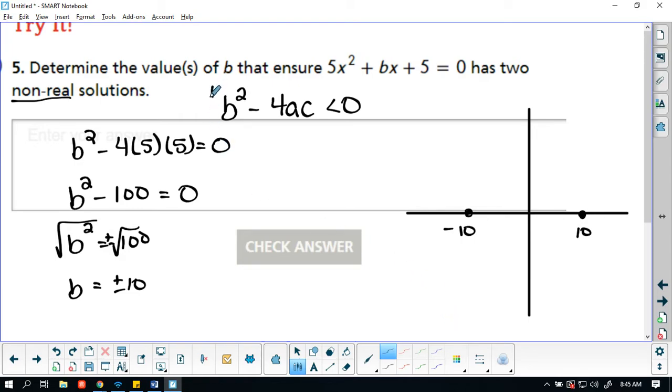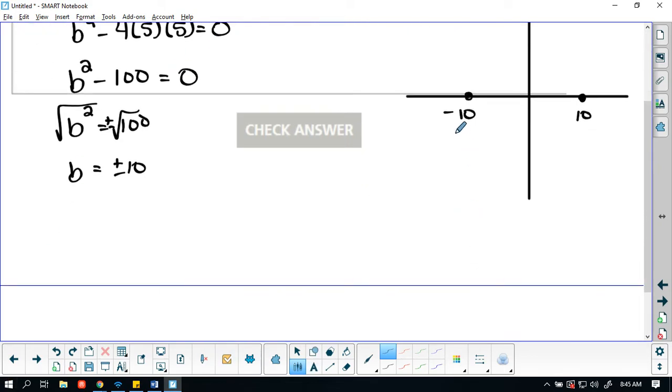Alright, we have a positive leading coefficient, which means that my graph, so basically we're going to find the bounds. So I'm going to look to see what happens on the left of 10, between these two, and on the right.